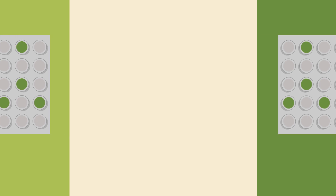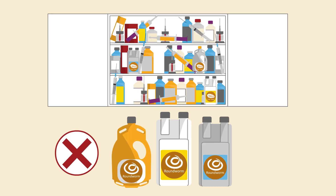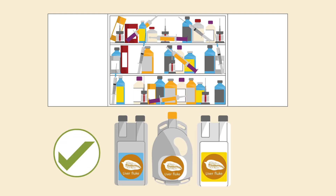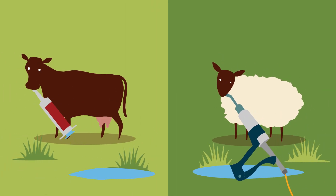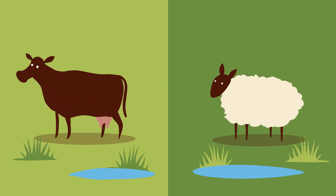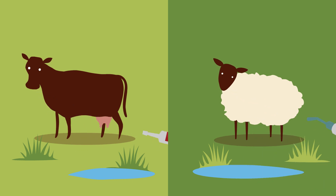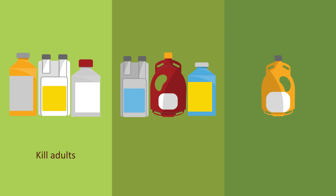Ask your vet for details. When it comes to fluke treatment, there are many important points to remember. Not all wormers will kill fluke, so a chemical with activity against liver fluke, a flukicide, should be used when fluke is the issue. None of the fluke drugs are long-acting, so animals can easily become reinfected after treatment. It may be necessary to administer a follow-up treatment and move animals to a low-risk pasture. Not all fluke drugs kill all stages of fluke — some only kill adults, some kill immatures and adults. Only one product, triclobendazole, can kill all stages.